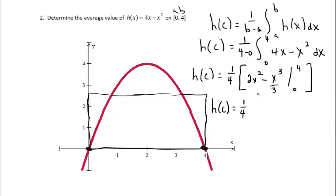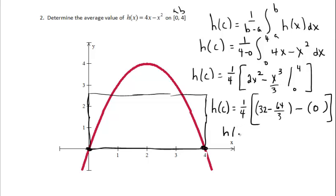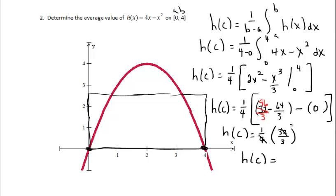So we have 1 over 4 times the result. Plugging in 4: 2 times 4 squared is 32, minus 4 cubed over 3 which is 64 thirds. Plugging in 0 gives 0. Getting a common denominator of 3: 32 becomes 96 thirds, so 96 thirds minus 64 thirds equals 32 thirds. Then one-fourth times 32 thirds: 4 goes into 32 eight times, giving 8 thirds, which is 2 and 2 thirds. That's the answer.